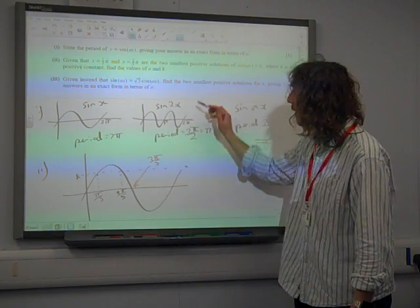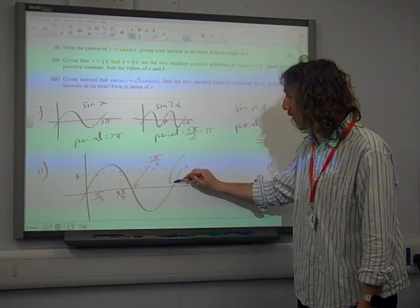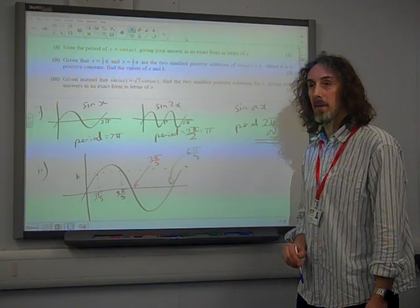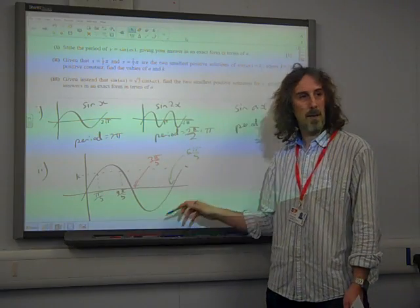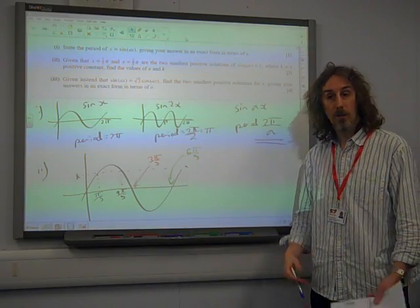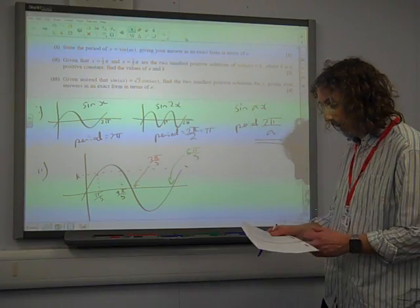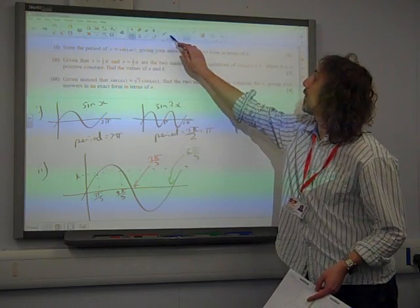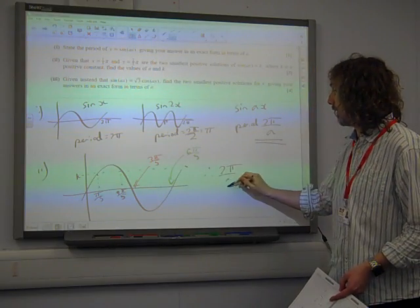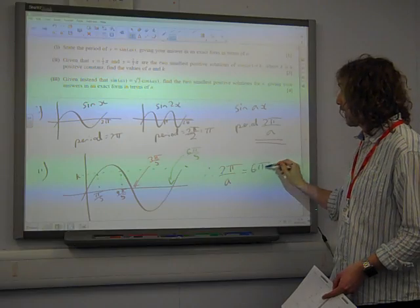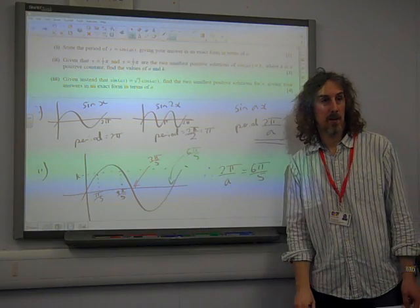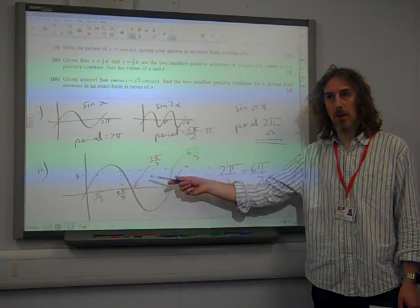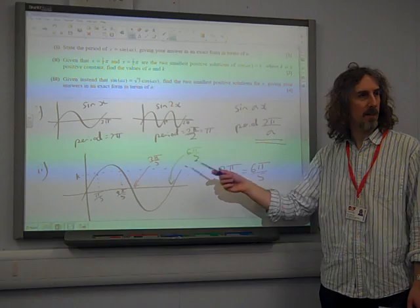That point there is half the distance of the whole thing. So this point here, our next conclusion, is that that point there is 6π/5. Because it does that wriggle and then it does that wriggle. Now I've just done this by writing it onto the graph, but what I've got there is that 2π over a is equal to 6π over 5. Do you see how we've worked that out? Are we happy with the logic that takes us to that point?